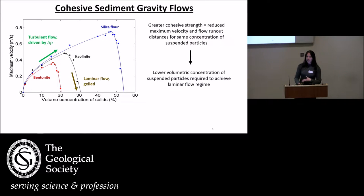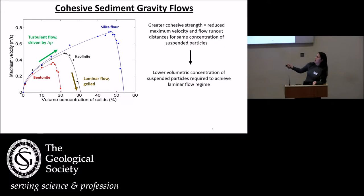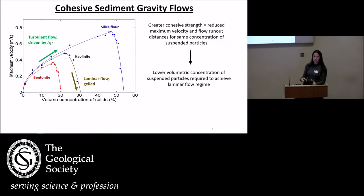Before I go into my methodology and results, I want to explain a bit more about cohesive sediment gravity flows. When you're using non-cohesive material, your flow behaviour is turbulent and flows accelerate the denser your fluid is — the more volumetric concentration of sediment you have, the faster the flow, until you get to a threshold point where the amount of sediment is too much and it freezes. But when you have cohesive material like kaolinite clay and bentonite clay, that threshold value is achieved a lot earlier, and the maximum flow velocity and run-out distances are reduced the more cohesive material you have.